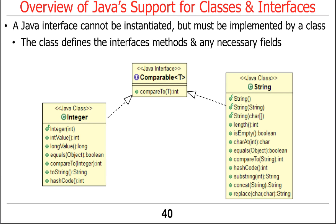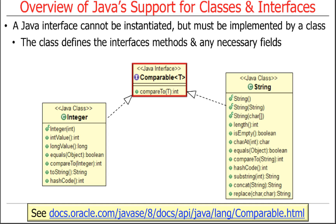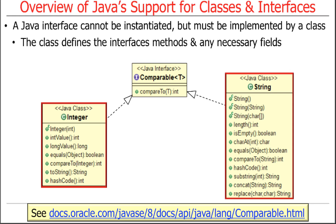Here's an example using the Comparable interface: Integer and String are both standard Java classes that implement the compareTo method. They fill in whatever it means to compare an integer or compare a string. But the interface is the common part — it defines a contract, a set of methods.